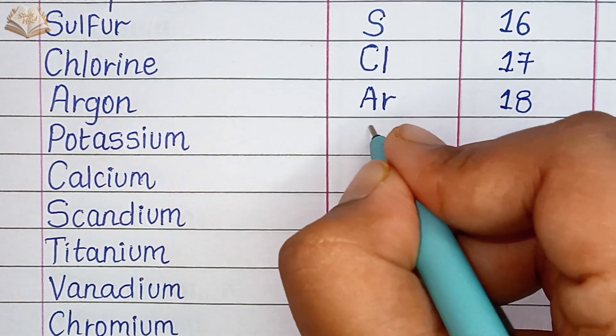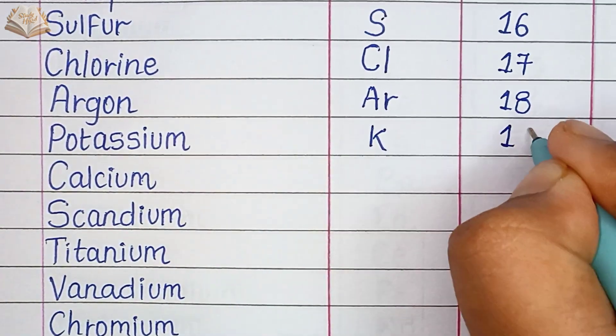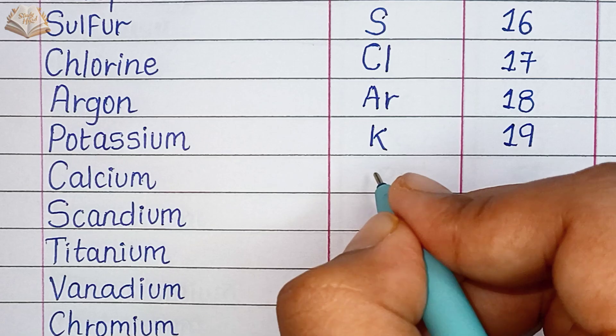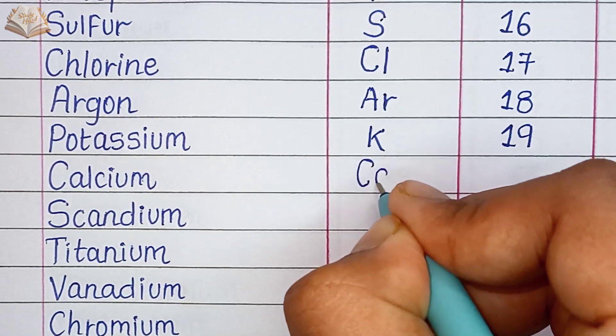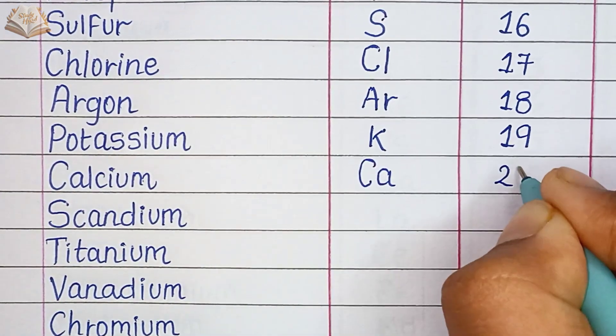Potassium, K, atomic number 19. Calcium, Ca, atomic number 20.